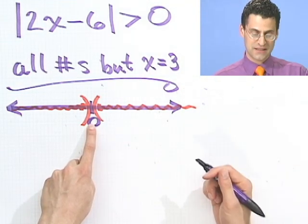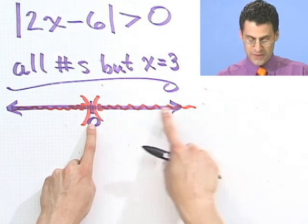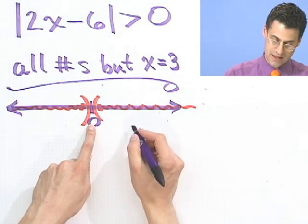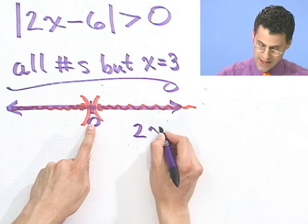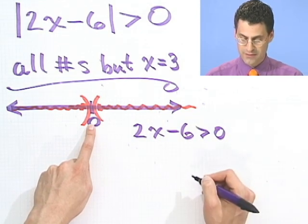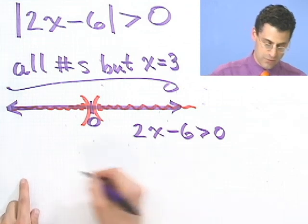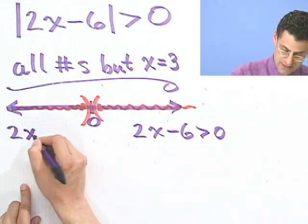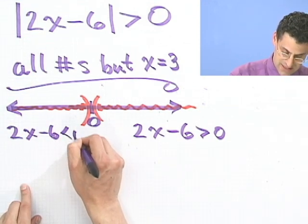So now I'd actually have to technically solve this inequality, which would be, I'll write it out here, 2x minus 6 greater than 0 and this inequality, which would be 2x minus 6 less than 0.